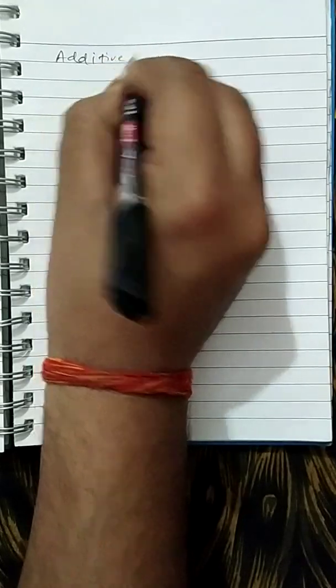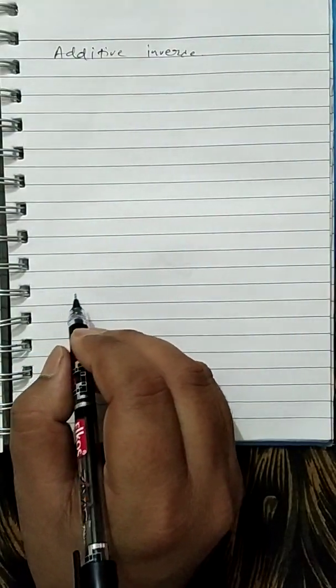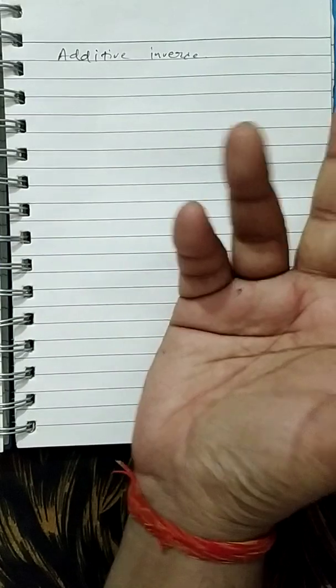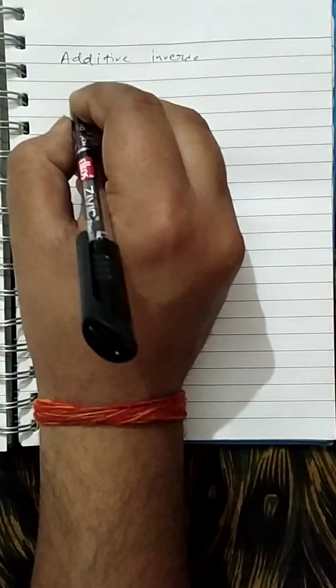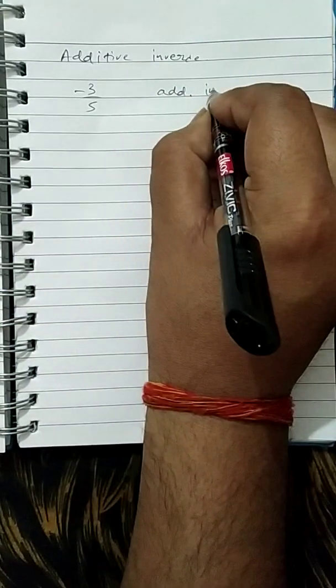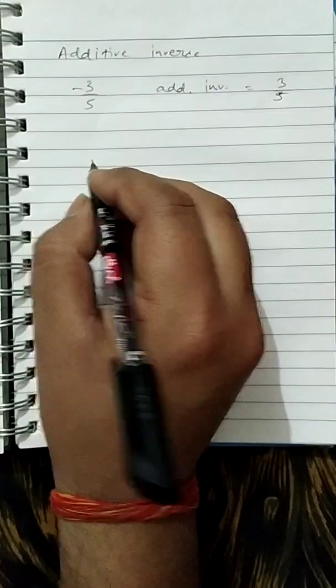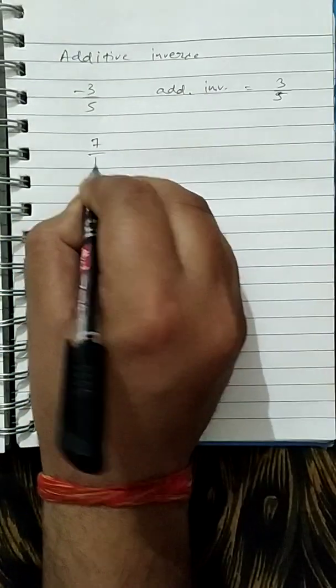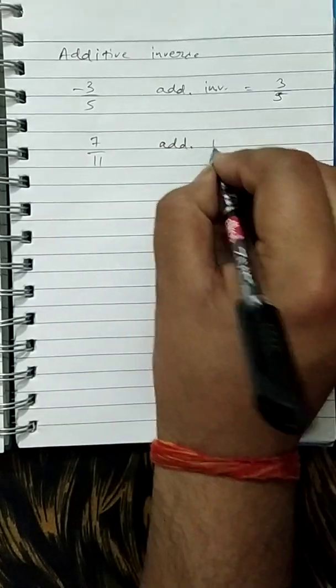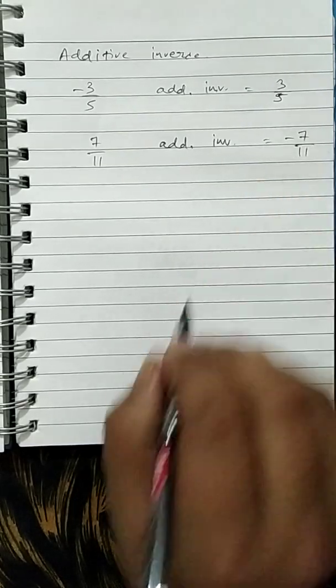Additive inverse is also one of the frequently asked questions. In additive inverse, we just add a negative sign or remove the negative sign. For example, minus 3 upon 5, its additive inverse will be 3 upon 5. And if we have a positive rational number, suppose I take 7 upon 11, its additive inverse will be minus 7 upon 11.